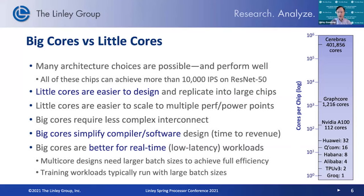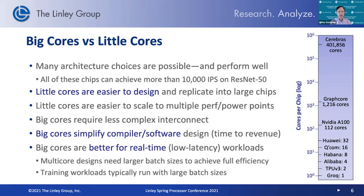We'll be hearing at the conference from Cerebras, who has hundreds of thousands of cores on their chips. Or you can make the cores bigger and more complicated, with more power per core. The interconnect is simpler because you don't have so many cores, and perhaps more importantly, the software becomes simpler because you don't have to divide the model into as many tiny pieces. The bigger core approach, which results in fewer cores on the chip, is better for latency-sensitive operations. In fact, Groq, which has just a single massive core on their chip, has the best latency we've seen on ResNet-50.